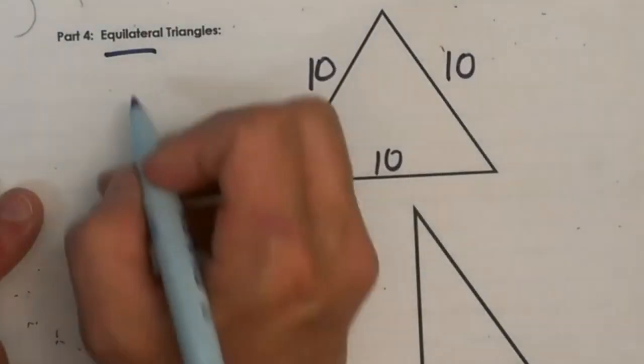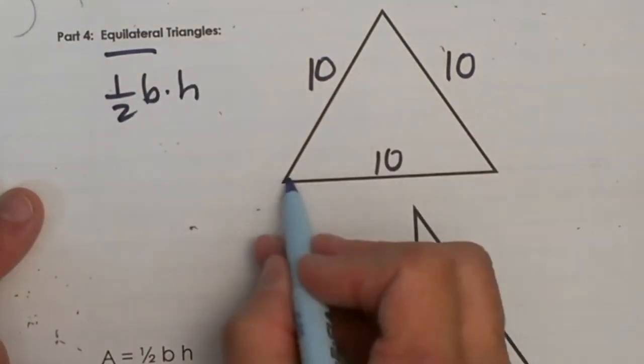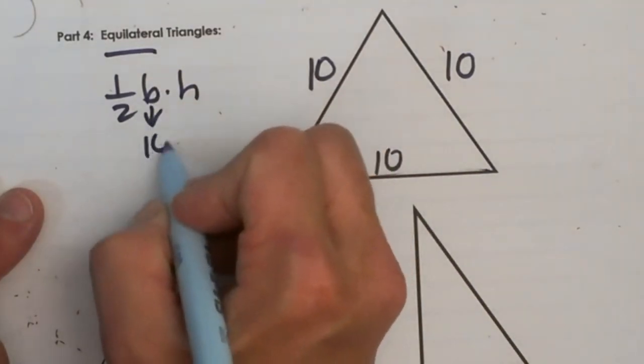What we need to find the area is the base and the height. The base of this triangle is 10, so that's pretty easy. We're just going to plug a 10 in here.